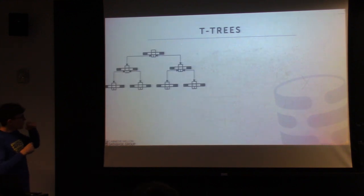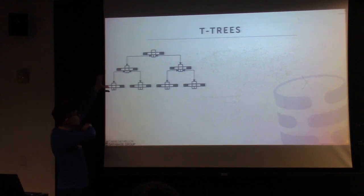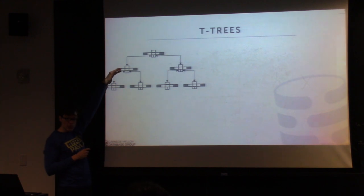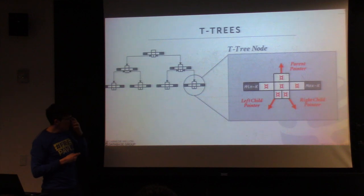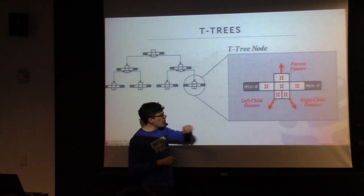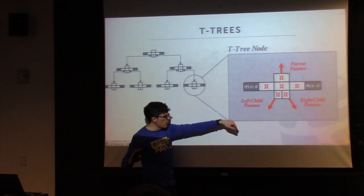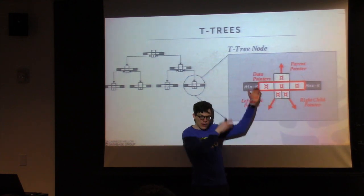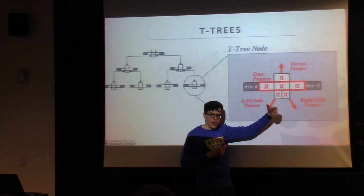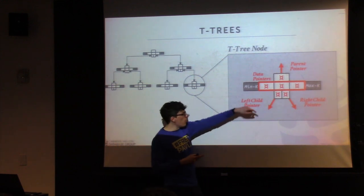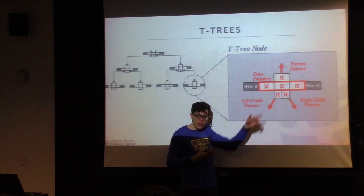This is roughly what a T-tree looks like — similar to a B-plus tree hierarchy. One key difference is that pointers between nodes are two-way: a parent has a pointer to its child and the child has a pointer to the parent. The node composition is where the name T-tree comes from, because the node is meant to look like a T. You have pointers to parents and to left and right children. Internally you have data pointers to the actual tuples whose values are indexed, stored in sorted order. You'd have to dereference them to figure out the actual value of the key being indexed.